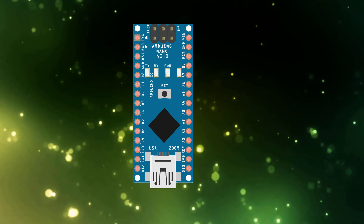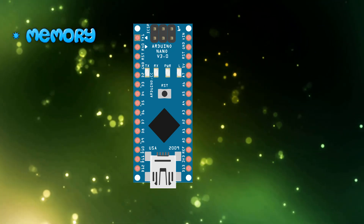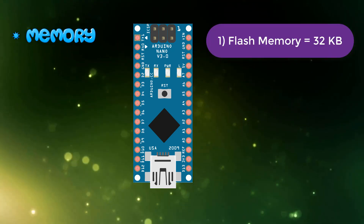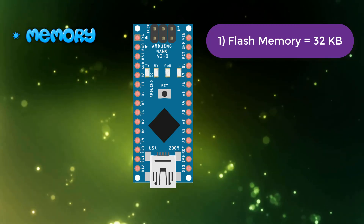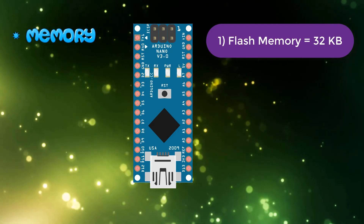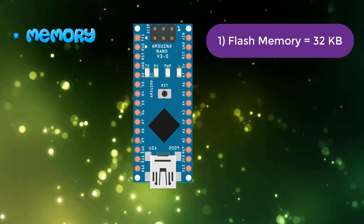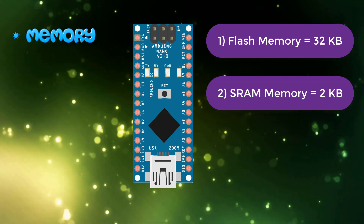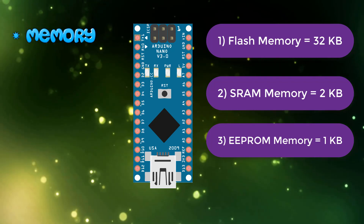Arduino Nano has three types of built-in memories. The first one is flash memory — Arduino Nano has 32 KB of flash memory, which is responsible for storing our code. However, 2 KB of that flash memory is used for the bootloader which is pre-installed on Arduino Nano. The SRAM memory of Arduino Nano is 2 KB, while the EEPROM memory is 1 KB.